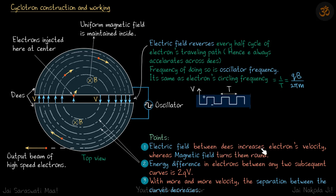The electric field between the dees increases electrons' velocity, whereas the magnetic field turns them round. Energy difference in electrons between any two subsequent curves is 2qV.